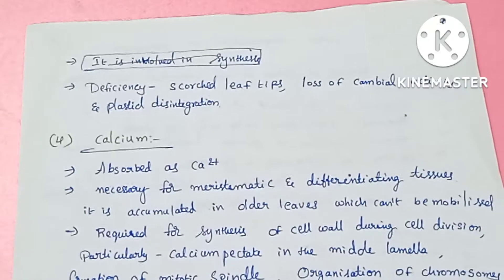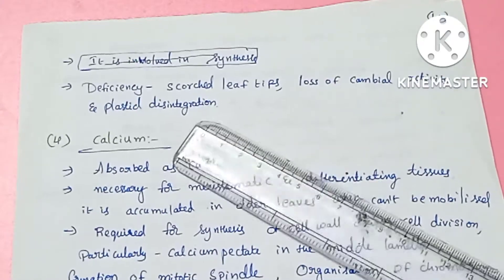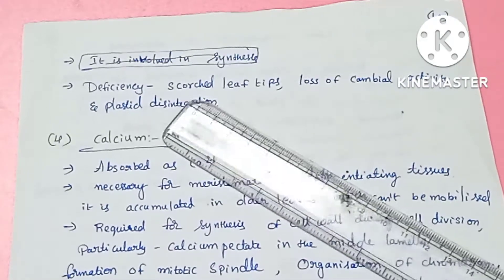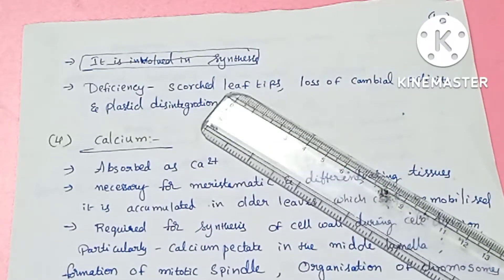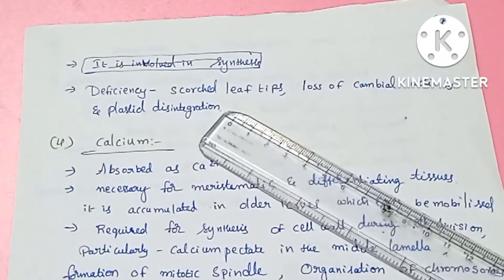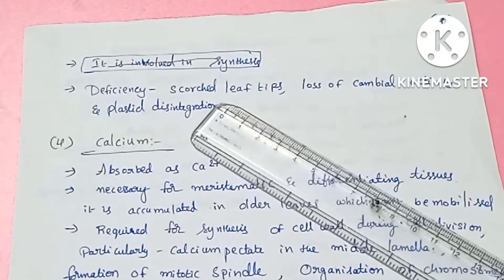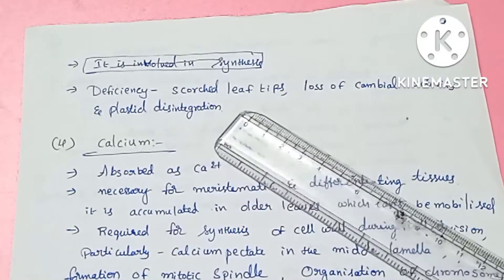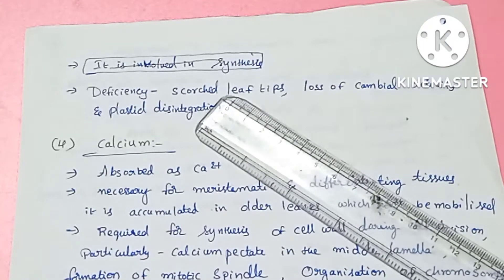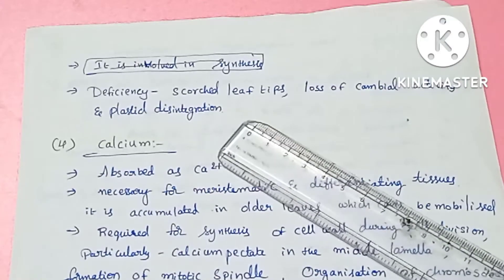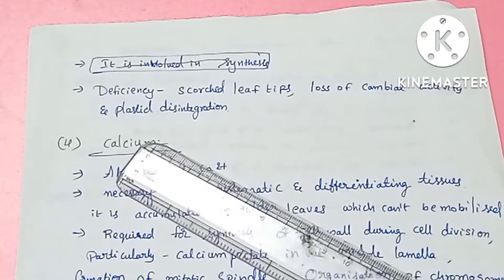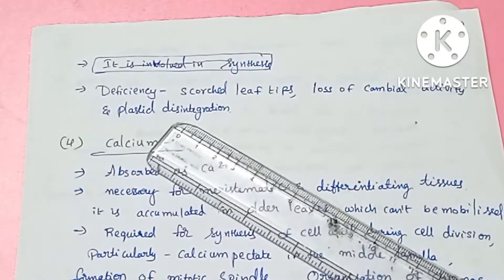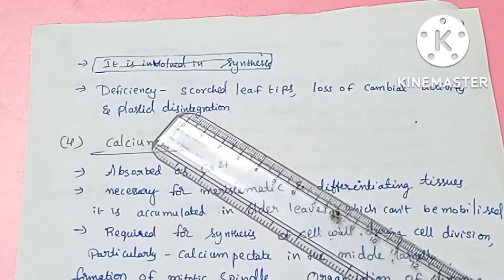Potassium deficiency in leaves causes scorched leaf tips. Deficiency of potassium also leads to plastid disintegration.